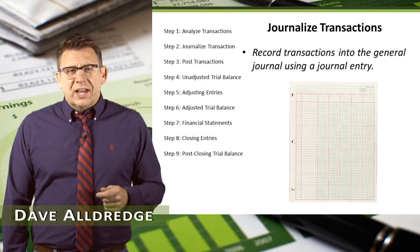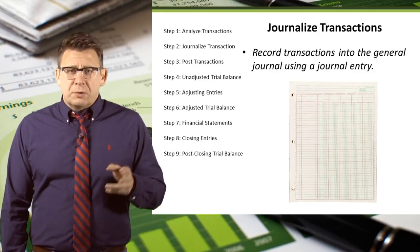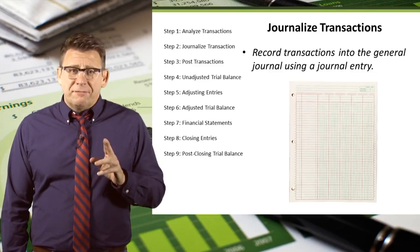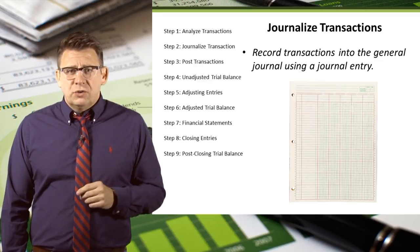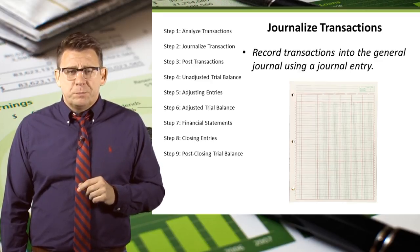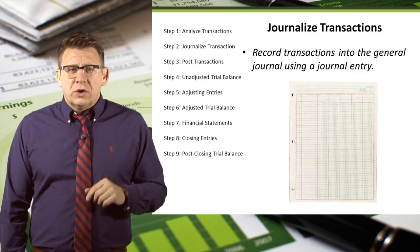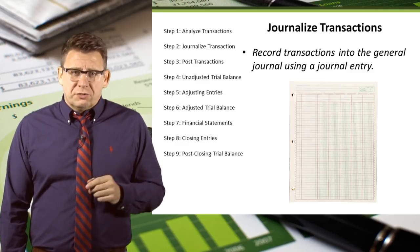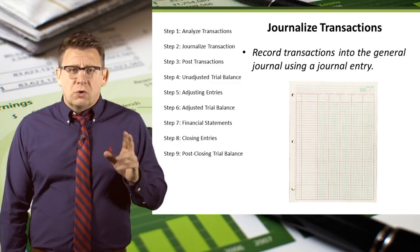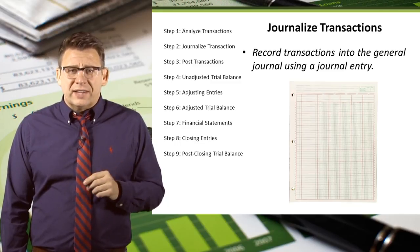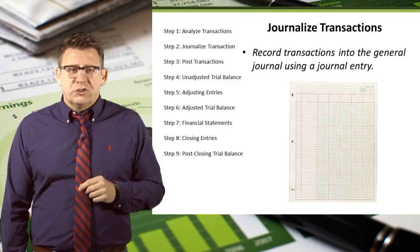Step 2 in the accounting cycle is journalizing transactions. This is the process whereby financial transactions are recorded into the accounting records of a company. Transactions are recorded with a journal entry, and these journal entries become the chronological list of all the transactions — that list is known as the general journal.